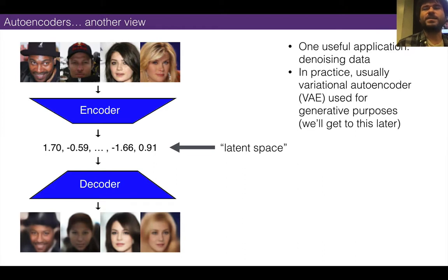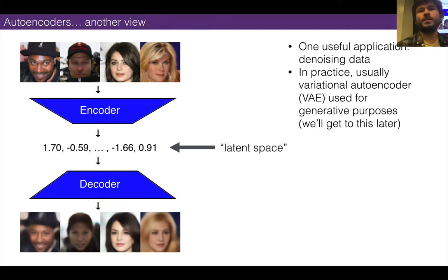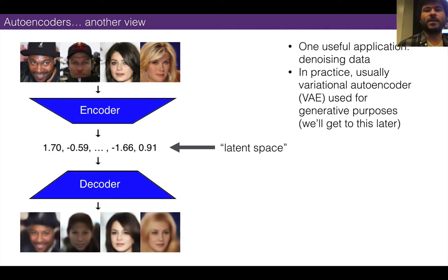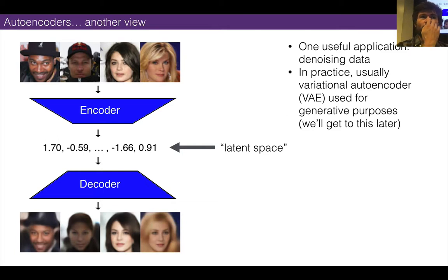What are autoencoders useful for? Besides generative models, they have almost no real applications as far as anyone knows. One useful thing they can do is denoising data — you train an autoencoder on noisy data, forward the image through, and you remove the noise, whether it's speckles or artifacts from a bad camera. Other than that, they're a curiosity and can be used as a generative model to generate fake things. They've been mostly supplanted by generative adversarial networks, which seem to be better for that, though there's interesting debate about this.